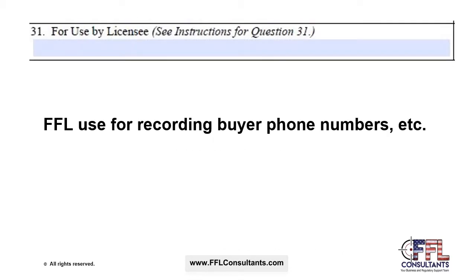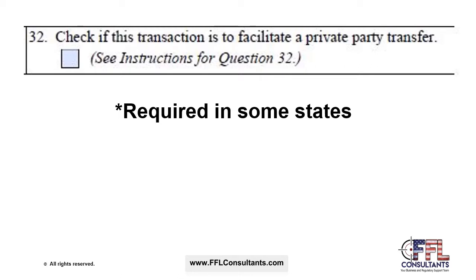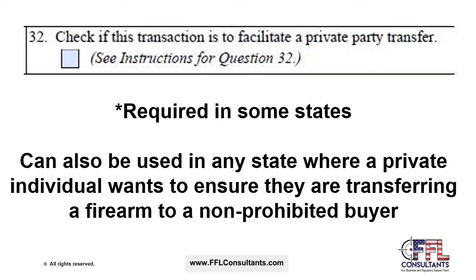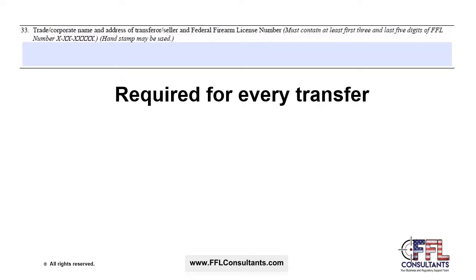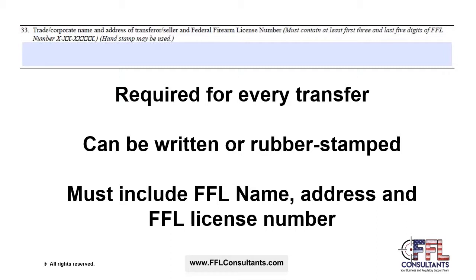The ATF has provided Box 31 for the exclusive use of the FFL — a great place to document phone numbers or any other details related to the firearms transfer. Box 32 is related to private party transfers and is required in some states by law. This can also be used in any state where a private individual wants to ensure they are transferring a firearm to a non-prohibited buyer in a private sale. Box 33 is where you input your FFL information, required for every firearms transfer — the information can be written or rubber-stamped and must include your FFL name, license address, and FFL license number.